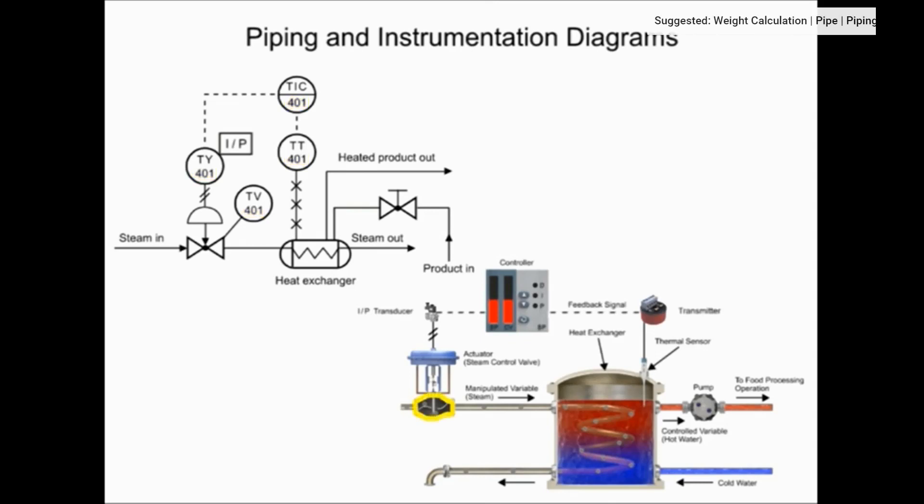The valve that allows steam to flow through the pipe is the symbol with two triangles.